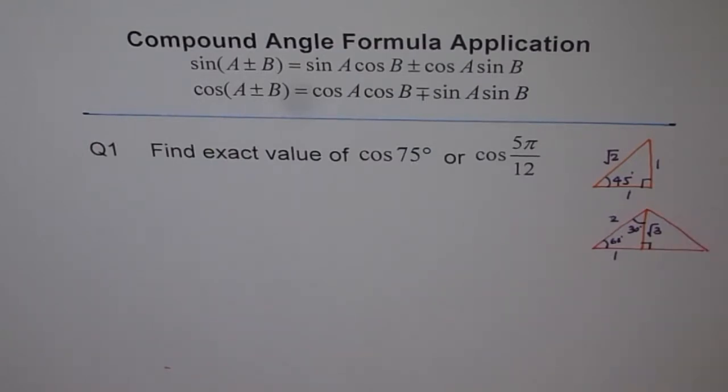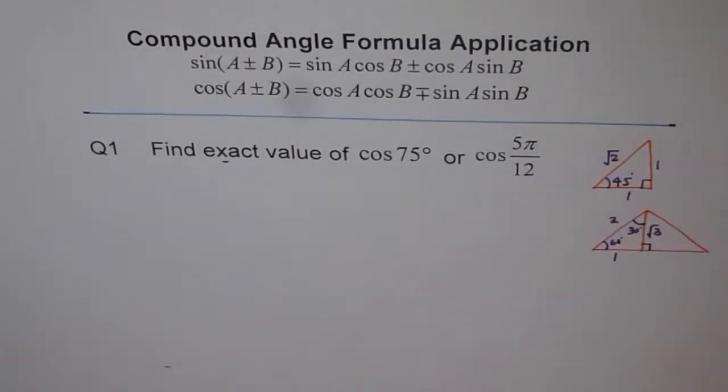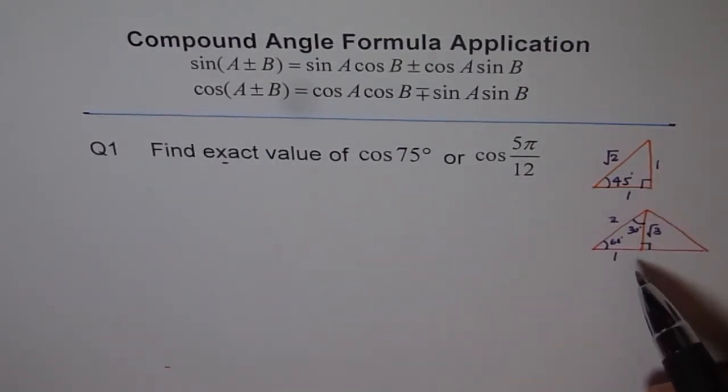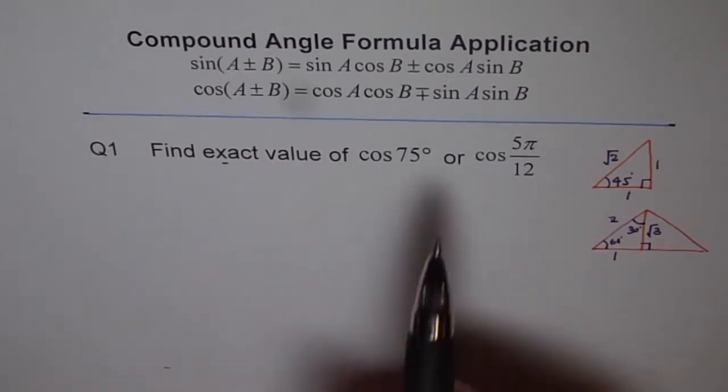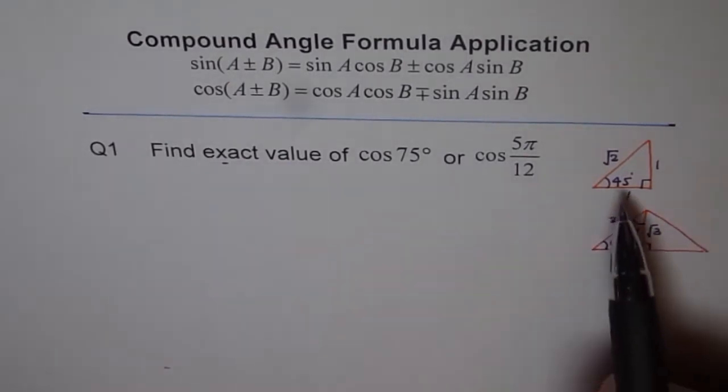Now, all these questions will need the help whenever you get this term exact value. Then, it is kind of a hint. Look into your special triangles, correct? Now, 75°. Can I write 75° as a combination of these?